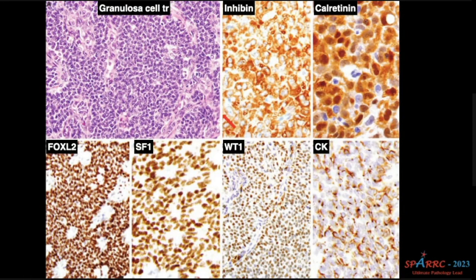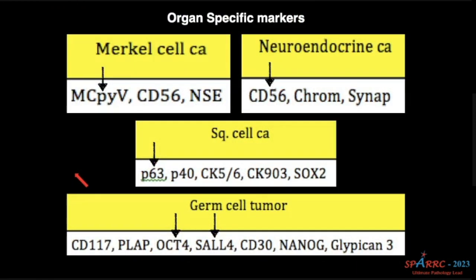Granulosa cell tumor — I told they will be positive for many markers, and FOXL2 is a nice nuclear marker. The other markers are inhibin, calretinin, SF1, WT1, and cytokeratin. But please remember these only for the exam. For practical purposes, do FOXL2 and you can diagnose the granulosa cell tumor.